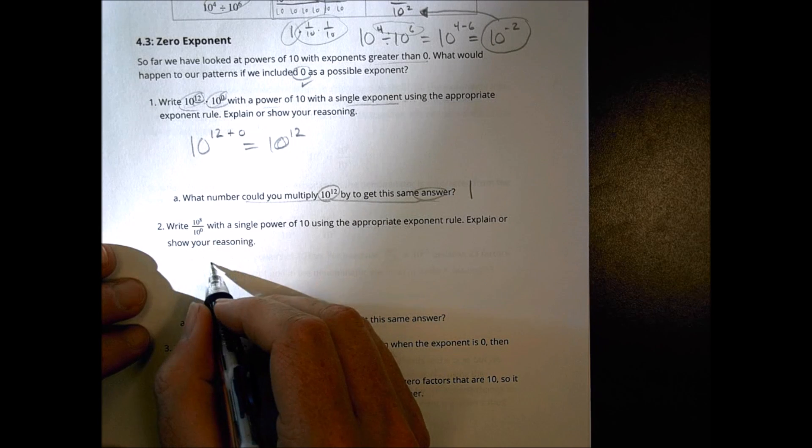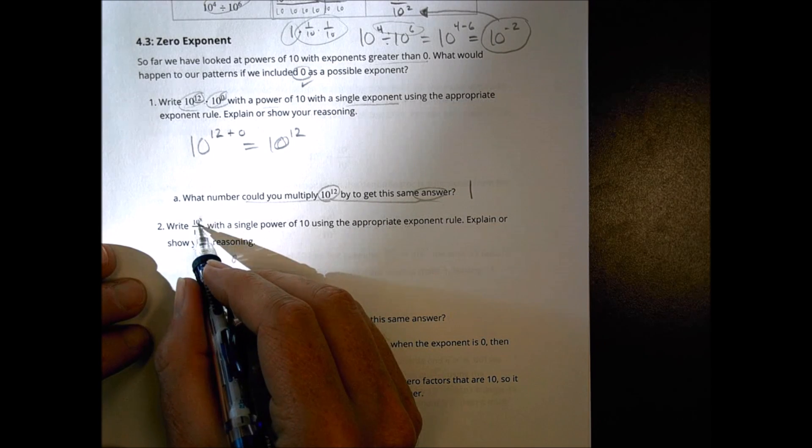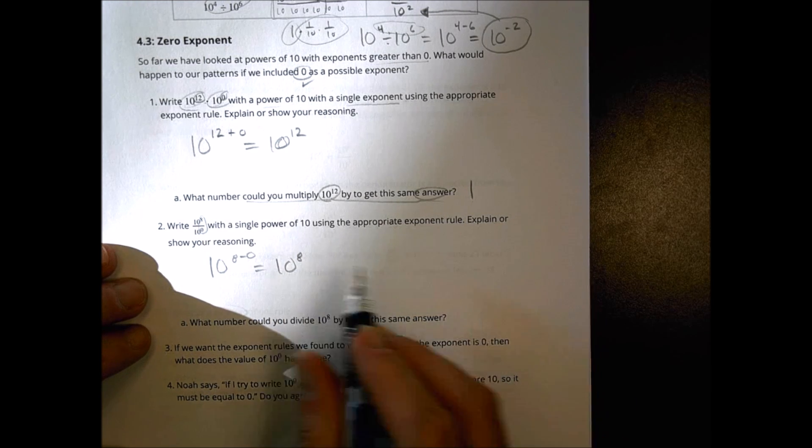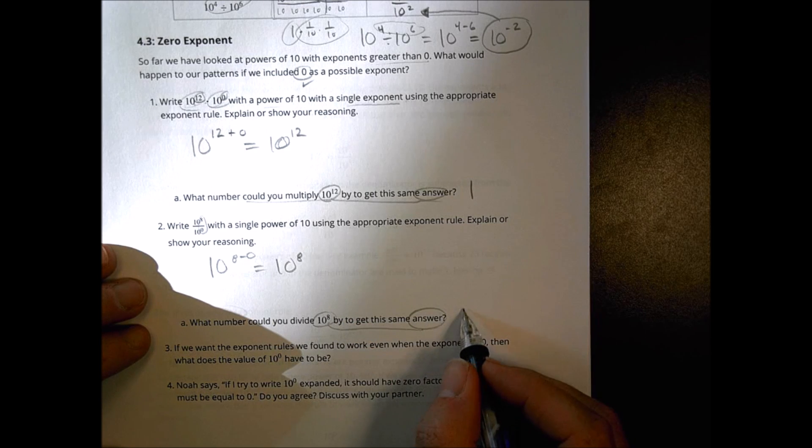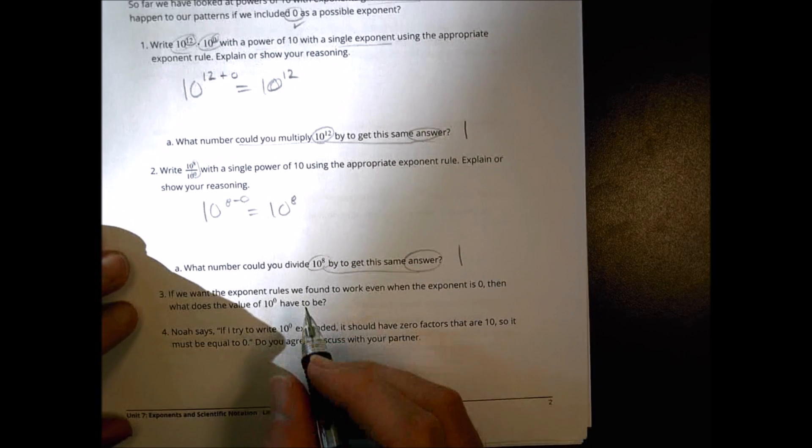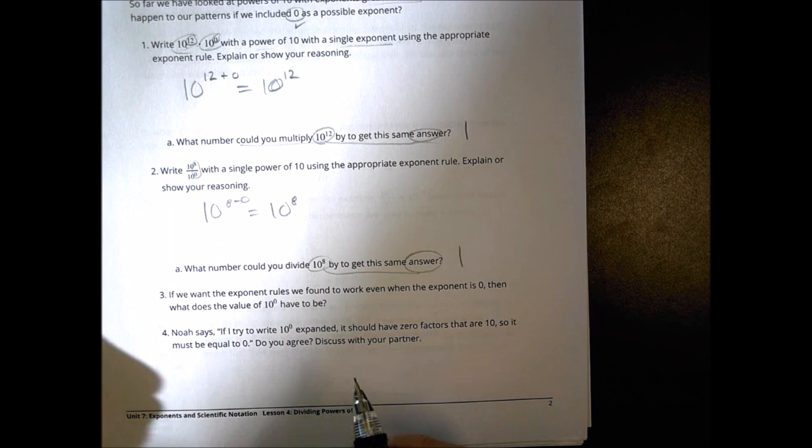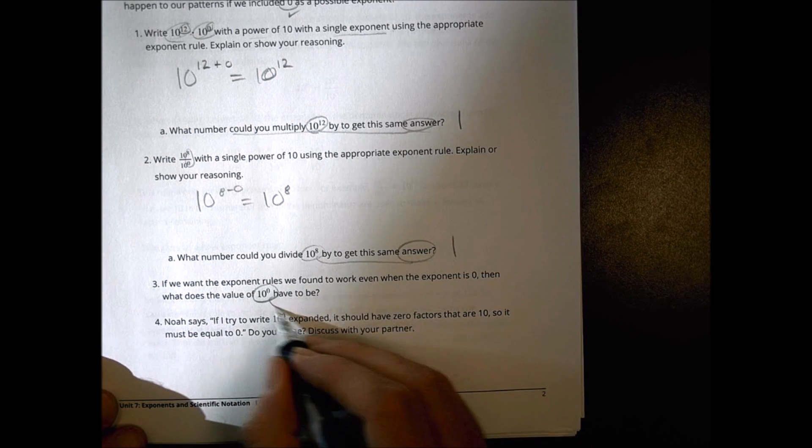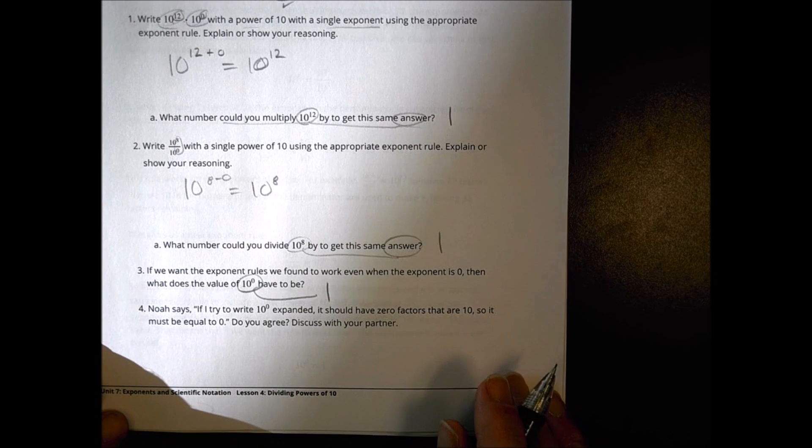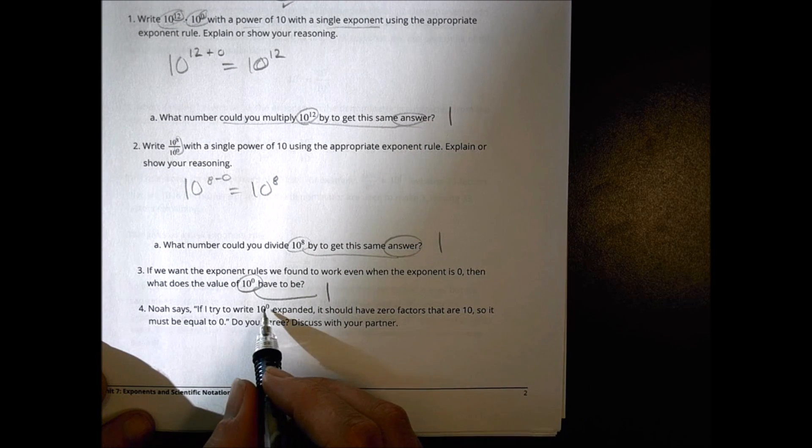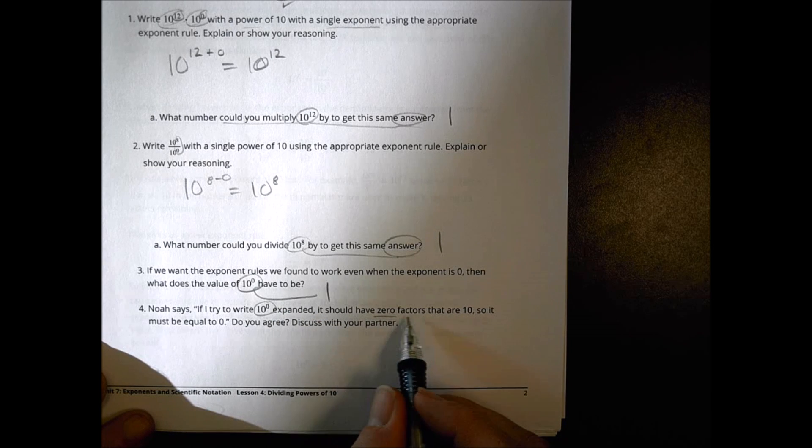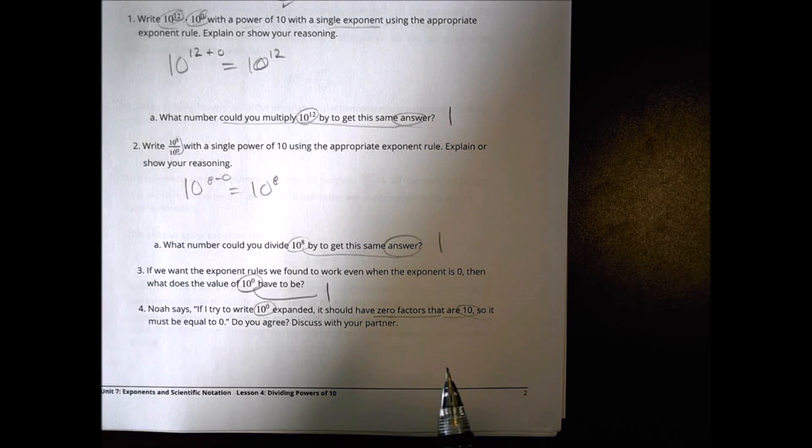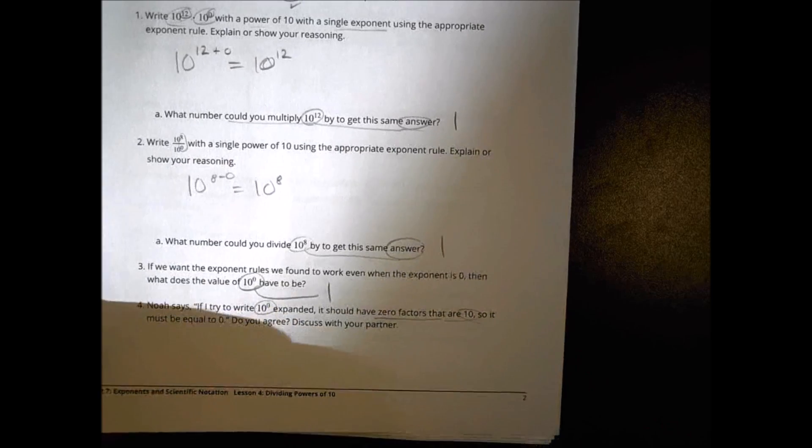How about over here? I have ten to the eighth following the same rule. Ten to the eighth, and again, we're subtracting, minus zero is going to equal ten to the eighth. So what number can I divide by ten to the eighth to still get ten to the eighth? That's going to be one. If we want the exponent rule we found to work even when the exponent is zero, then what does the value of ten to the zero have to be? It has to be one in order for this to actually work out for us. Noah says if I try to write ten to the zero expanded, it should have zero factors that are ten. So it must be equal to zero to agree to discuss that. Well, have a discussion. I'll let you talk about that with your neighbor and see what you think about that one.